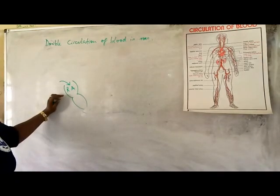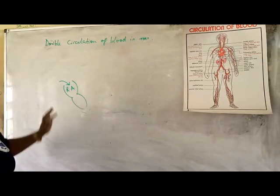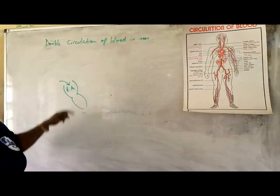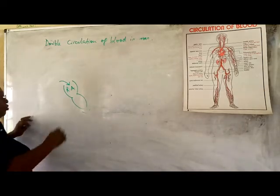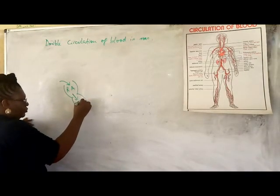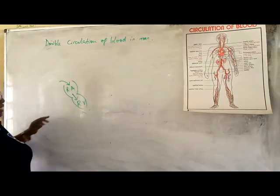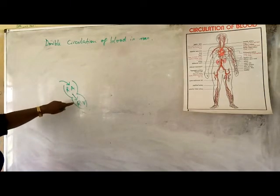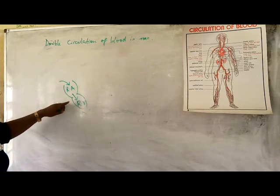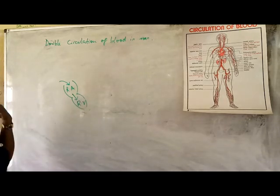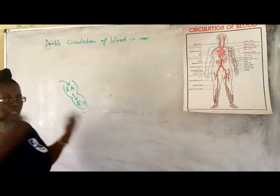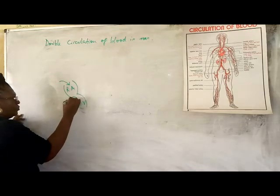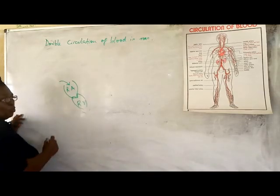When blood enters into your right atrium, your right atrium contracts — it's like a balloon — and that contraction forces blood into the right ventricle. There is something between the right atrium and the right ventricle, and that's called a valve. A valve does not allow backflow; when blood has moved this way, it doesn't move back. This valve is called the tricuspid valve.